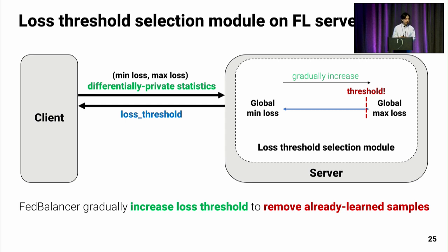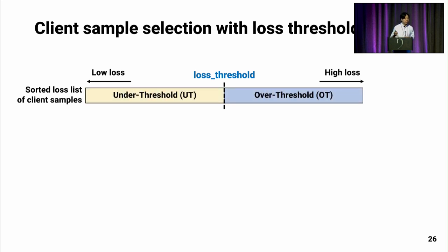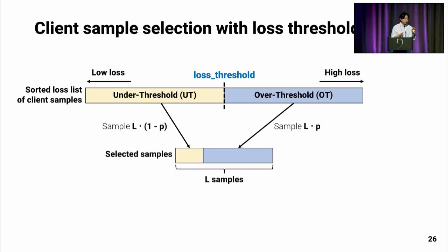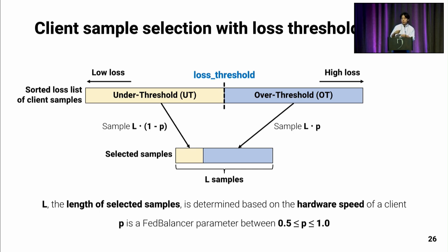Given the loss threshold, the client performs sample selection using a sorted loss list. The left side represents low loss and the right side high loss. With the threshold, client data is divided into under-threshold and over-threshold groups, and selected samples are drawn from each group with a length of L, determined based on the hardware speed of the client. The parameter P determines how much to sample from each group and is another FedBalancer parameter. Please refer to our paper for more details.